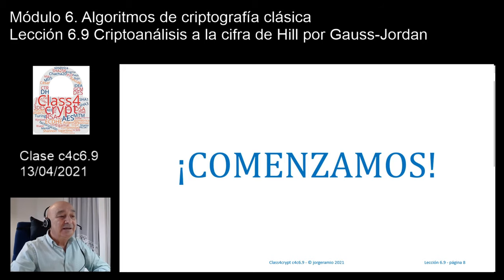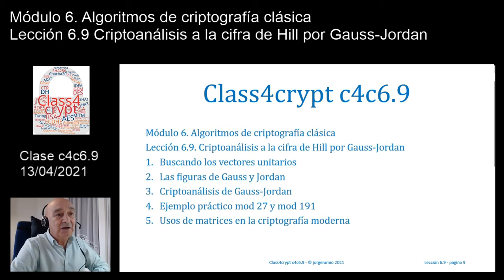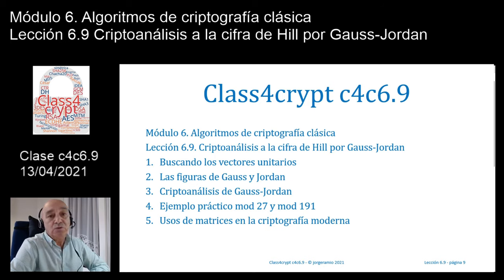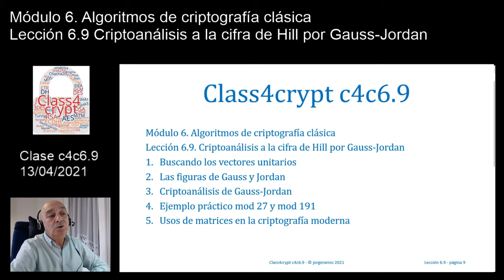Hola, encantado de saludarte. Vamos a comenzar la clase de hoy, que es la última de este módulo dedicado a los algoritmos de criptografía clásica. La lección 6.9 lleva por título Criptoanálisis a la cifra de Hill por Gauss-Jordan. Nuestra agenda: 1) Buscando los vectores unitarios. 2) Las figuras de Gauss y Jordan. 3) Criptoanálisis de Gauss-Jordan. 4) Ejemplo práctico, módulo 27 y módulo 191. 5) Usos de matrices en la criptografía moderna.